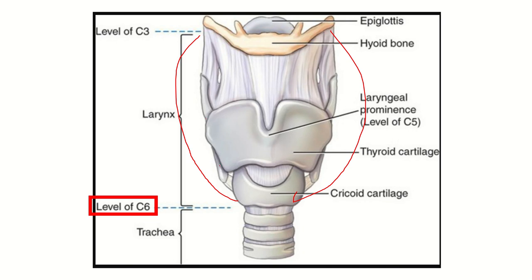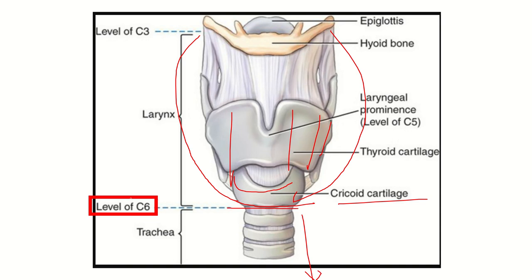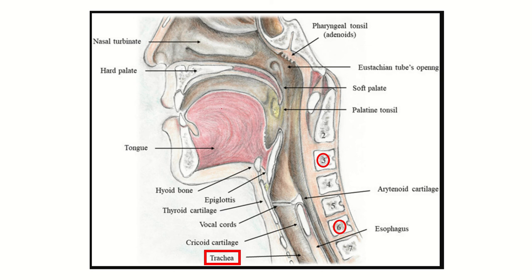This is the thyroid cartilage, and below the thyroid cartilage is the cricoid cartilage. Below the cricoid cartilage is the lower part of the larynx. After the cricoid cartilage, the trachea starts — and we can see this point here. The vertebral level at this point is cervical 6.